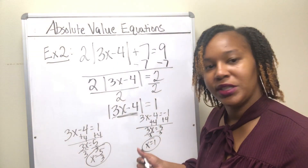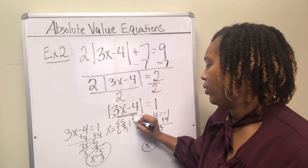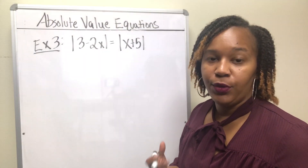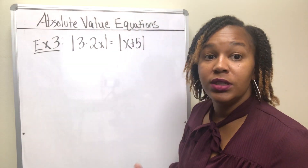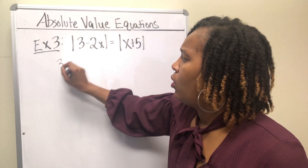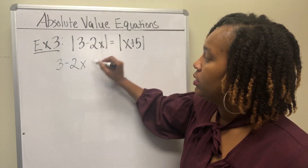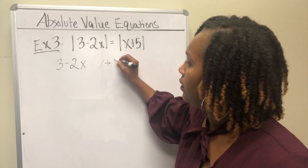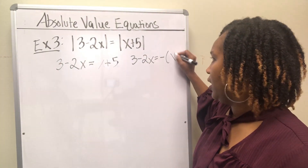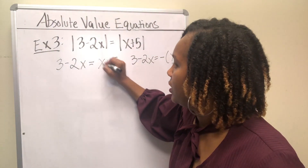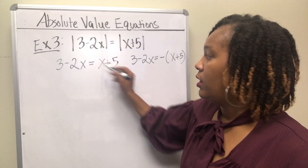You can plug them back in and check to make sure it works out. You can write them as shown or in set builder notation: {5/3, 1}. For example 3, we're going to solve an absolute value equation where an absolute value equals another absolute value. You use the same principle — keep what's inside one absolute value the same and only change the positive and negative on the other side.